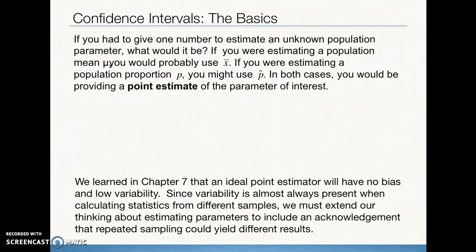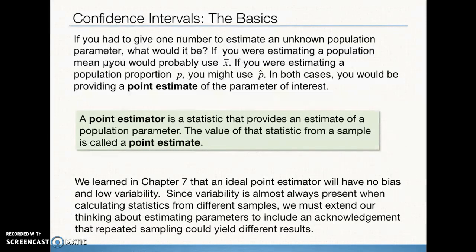If we were trying to estimate a population parameter such as the population mean, we would use a sample mean. If we were trying to estimate a population proportion, we would use a sample proportion. In both cases, we use a point estimate to estimate the parameter of interest. The ideal point estimator will have low bias and low variability, but we have sampling variability, so every time we take a sample, we'll get a different point estimate.